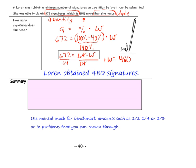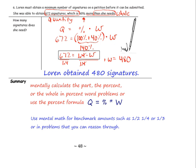So I did not solve this problem mentally. Rather, I solved it with an equation. The essential question for part of this lesson was how do you know when to use mental math? You can use mental math for benchmark amounts such as one-half or one-fourth or one-third or figures that you are familiar with or problems that you can reason through. But if it's not a problem that you can reason through, then feel free to use another strategy such as drawing a diagram or writing an equation. You can mentally calculate the part, the percent, or the whole in a percent word problem or you can use the percent formula quantity equals percent times whole.